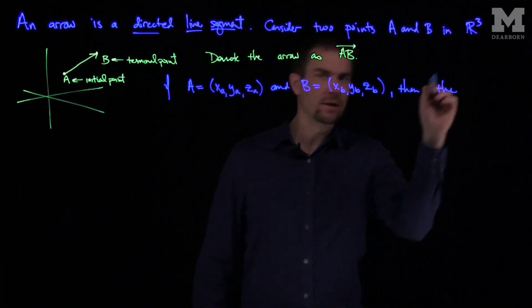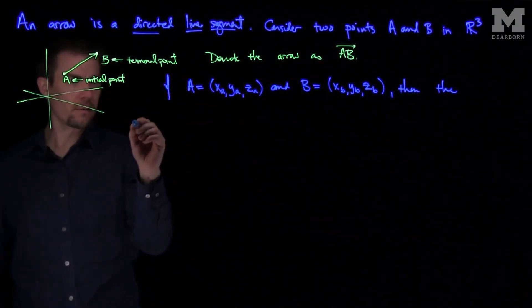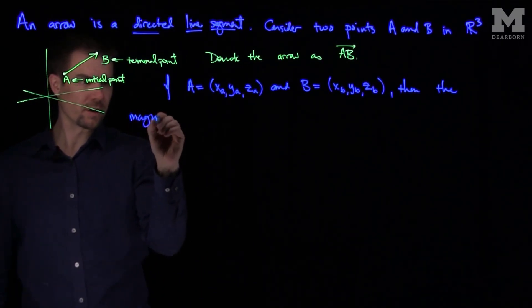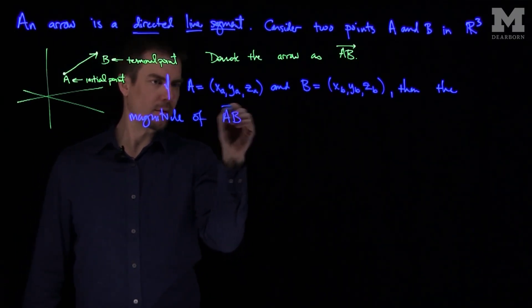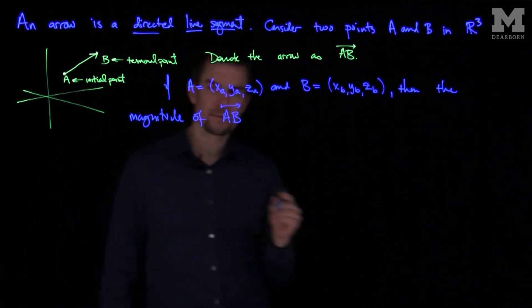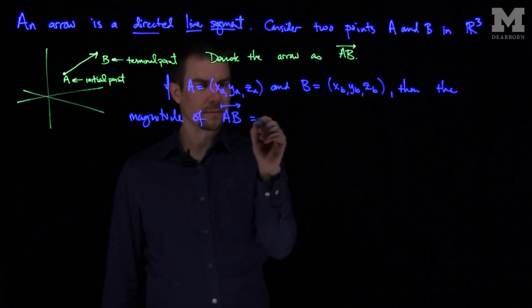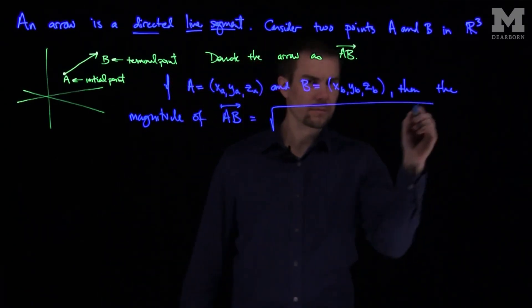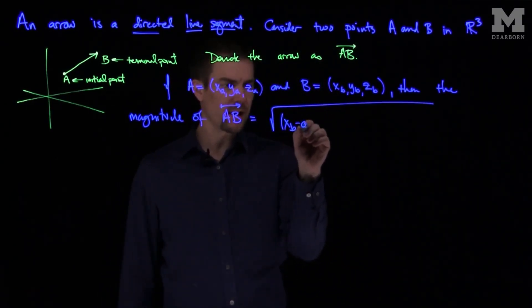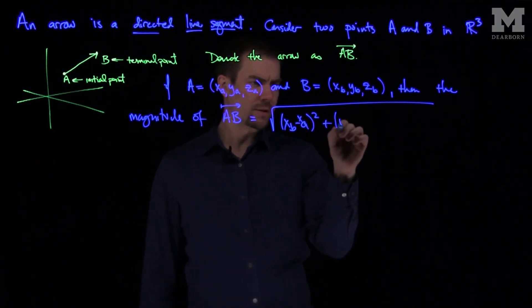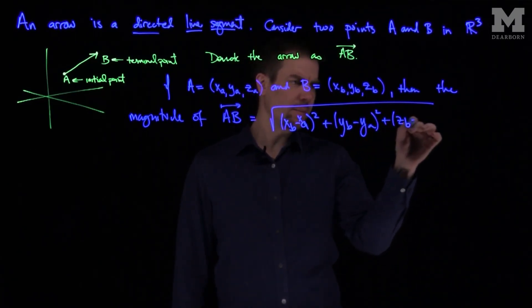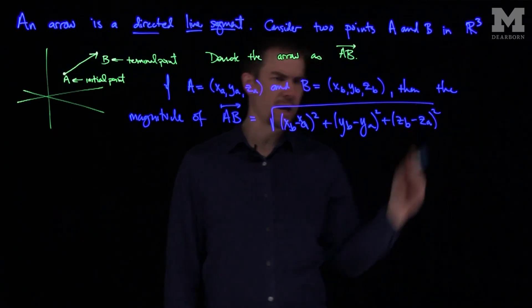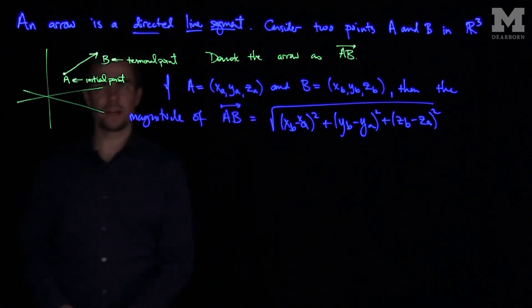Then, the magnitude of this arrow, magnitude. We'll talk about vectors after we talk about arrows. So this is the square root of (XB minus XA) squared, plus (YB minus YA) squared, plus (ZB minus ZA) squared. That is the length.